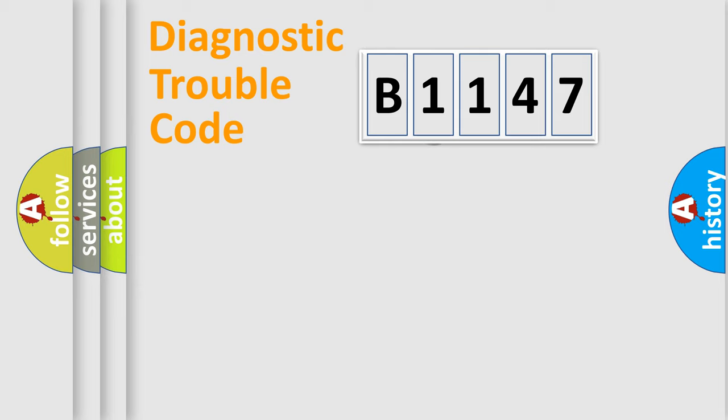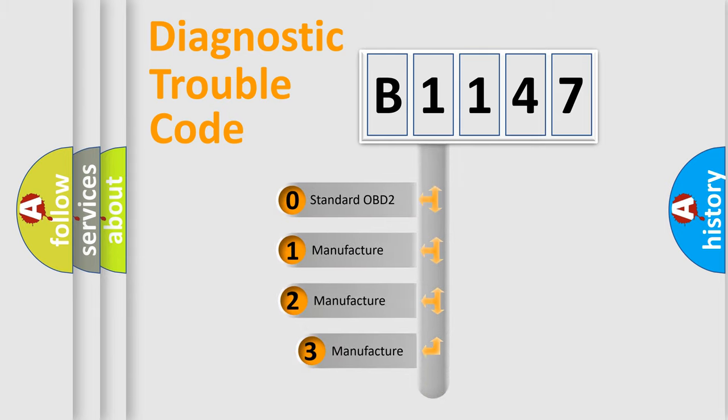Powertrain, Body, Chassis, and Network. This distribution is defined in the first character code.